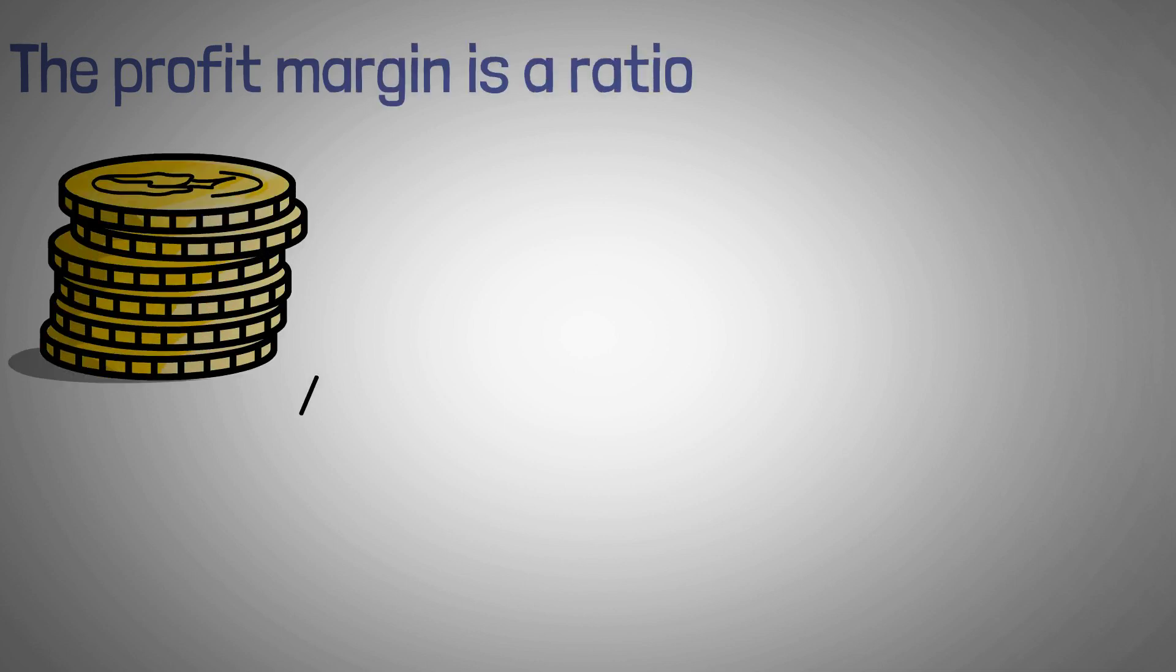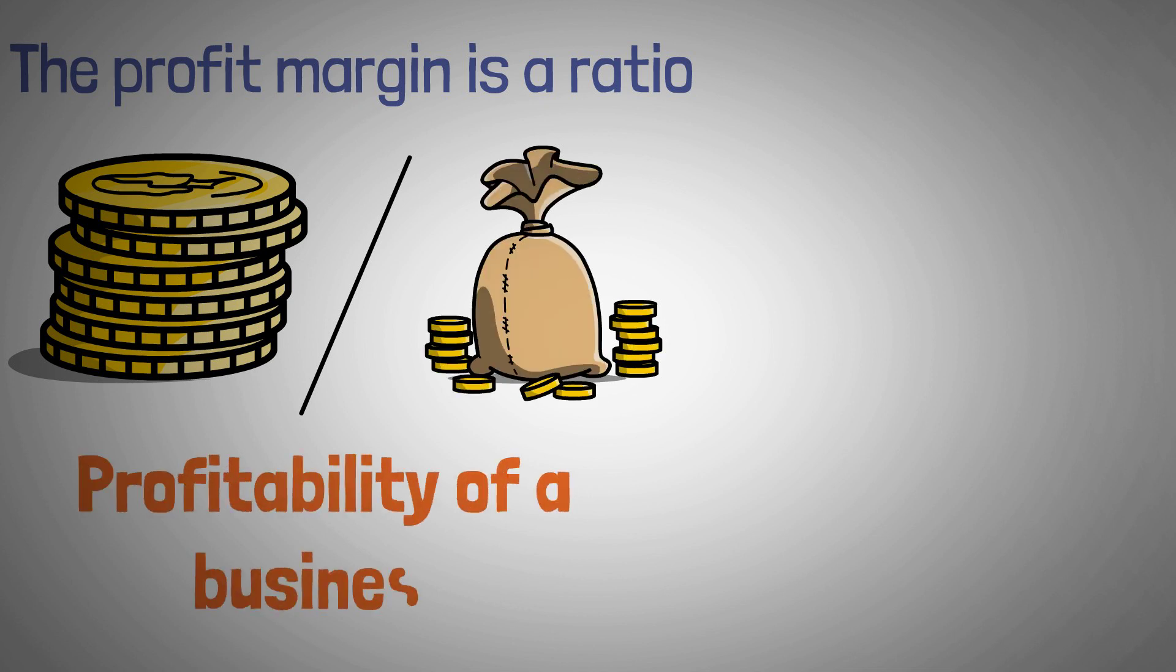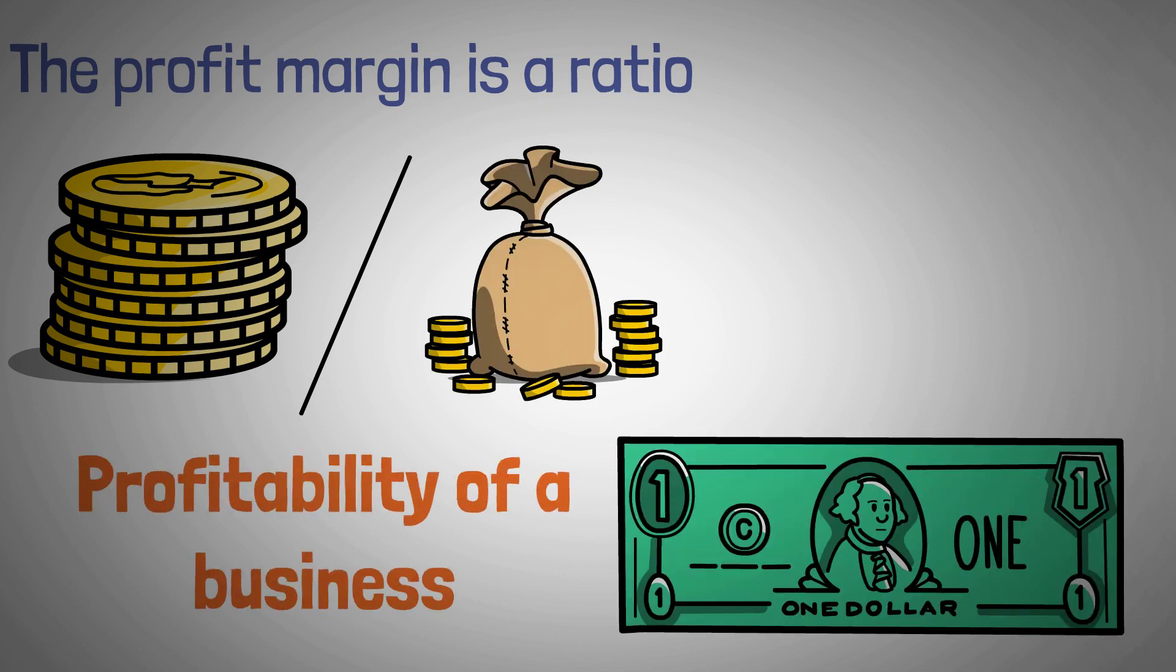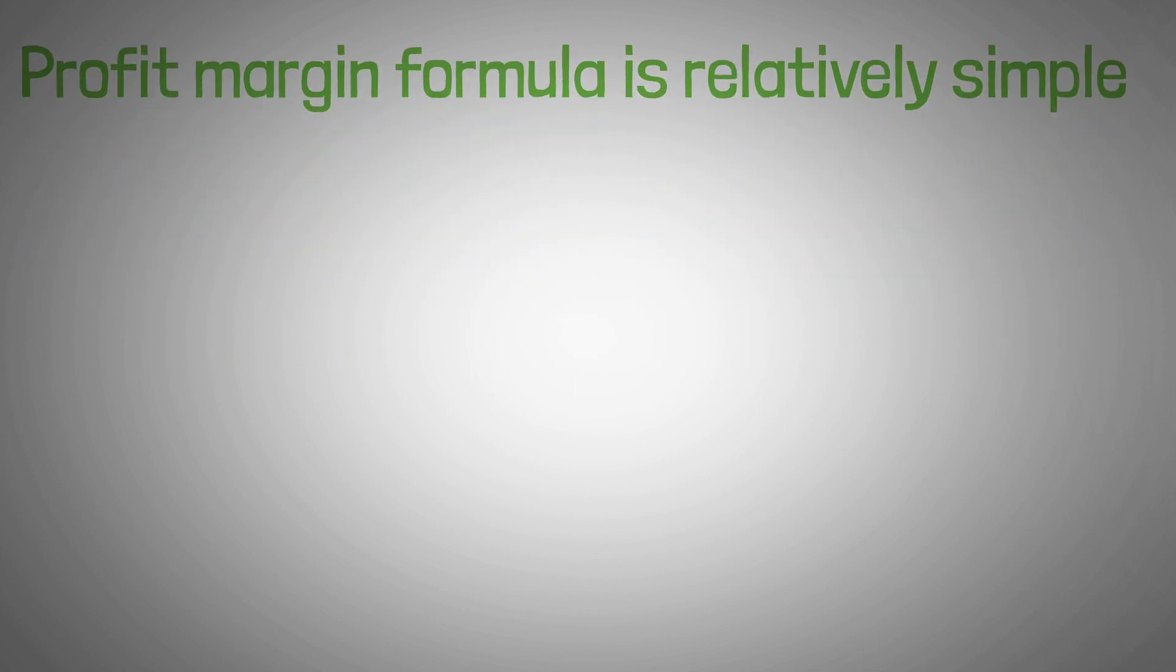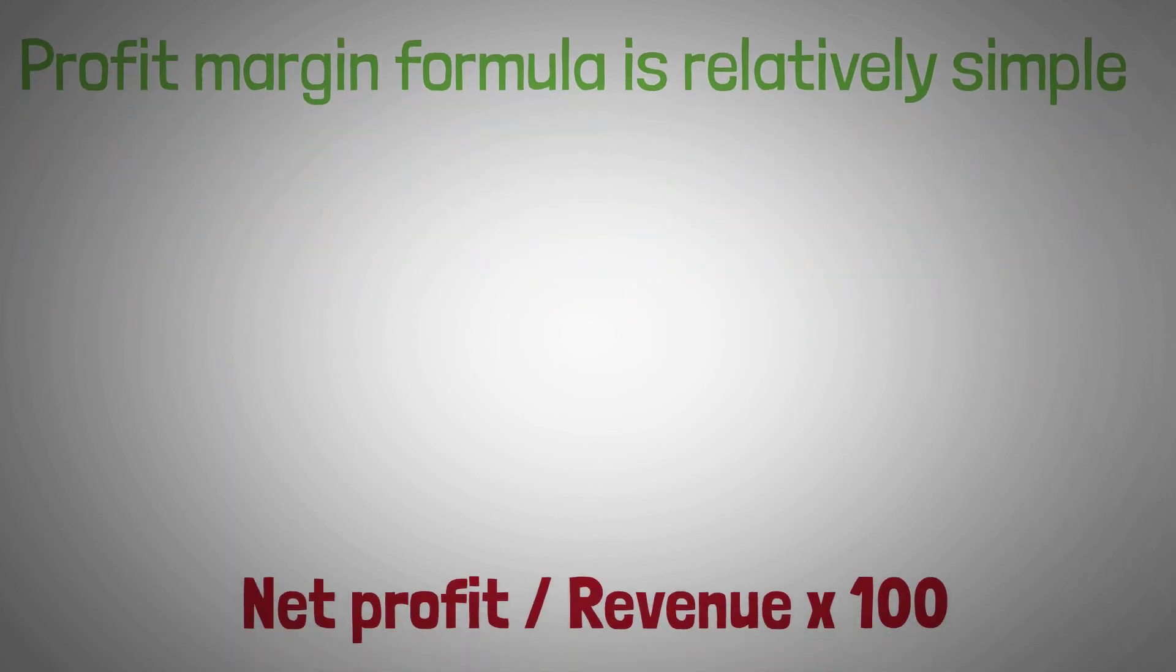The Profit Margin is a ratio that compares the amount of profit a business generates to its revenue. It's a way to measure the profitability of a business and to determine how much of each dollar in revenue is turned into profit. The Profit Margin Formula is relatively simple and is calculated by dividing the net profit by the revenue and multiplying it by 100 to get a percentage.